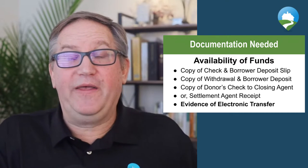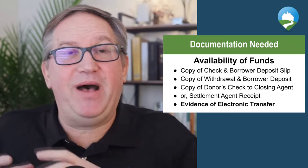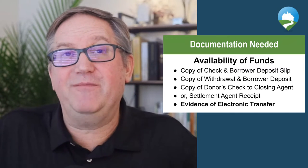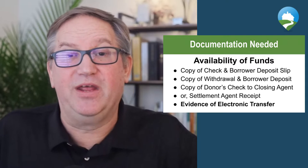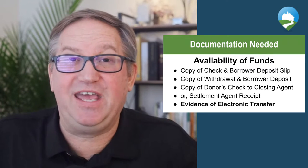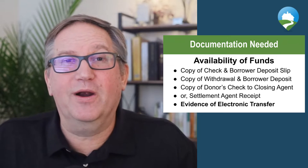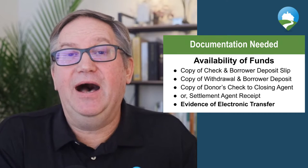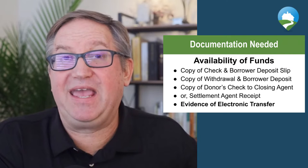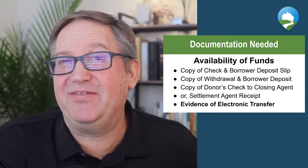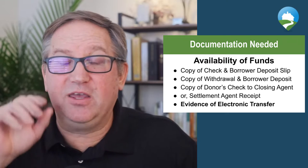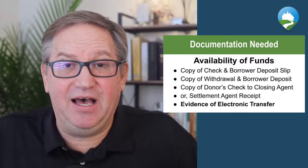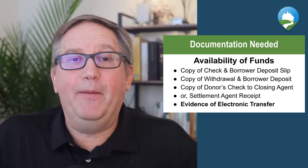If they withdraw money from their account and deposit it into yours, you have to show their bank statements, the withdrawal slip, and the exact amount deposited into your account. If they give the money directly to the closing agent — whether you're using an escrow company or a settlement attorney — you may have to show where the money came from, and you can use the receipt from the settlement agency showing they received the money as sufficient documentation.